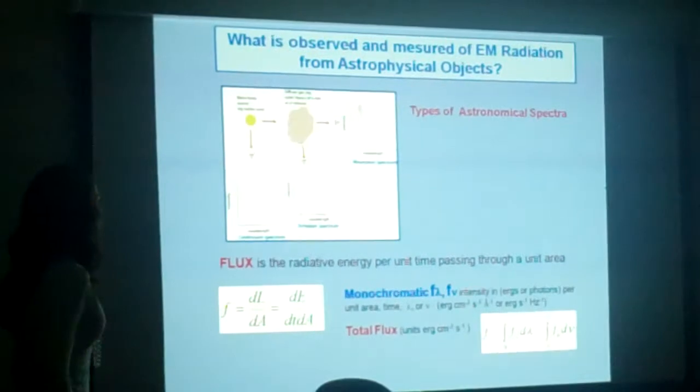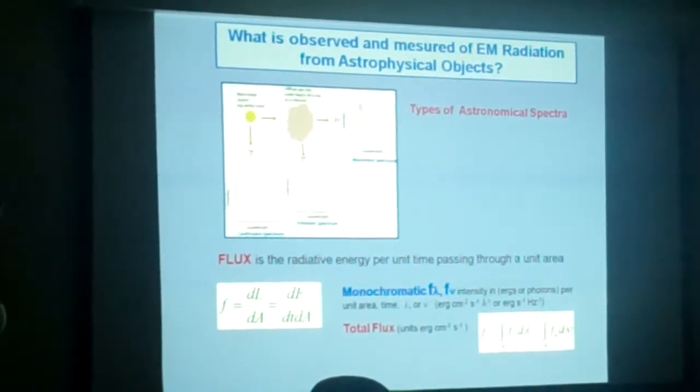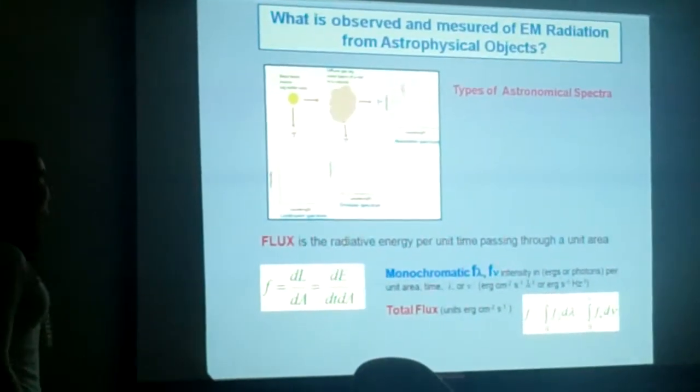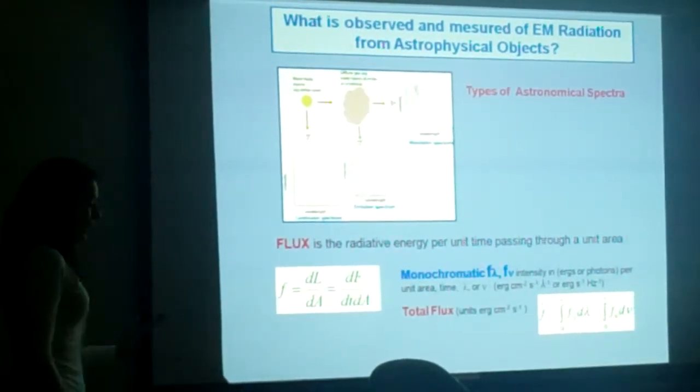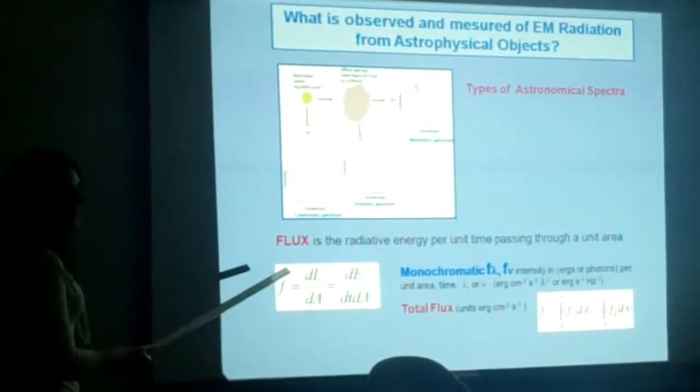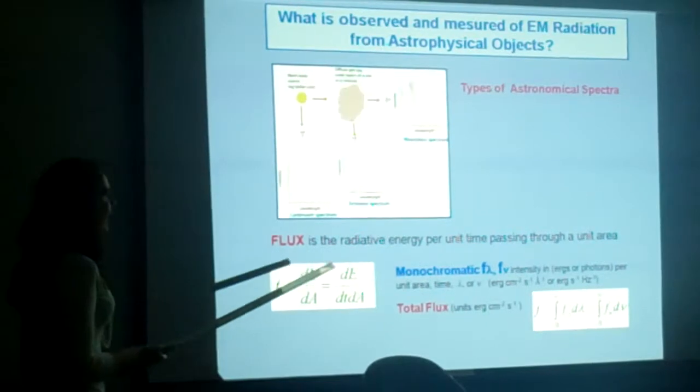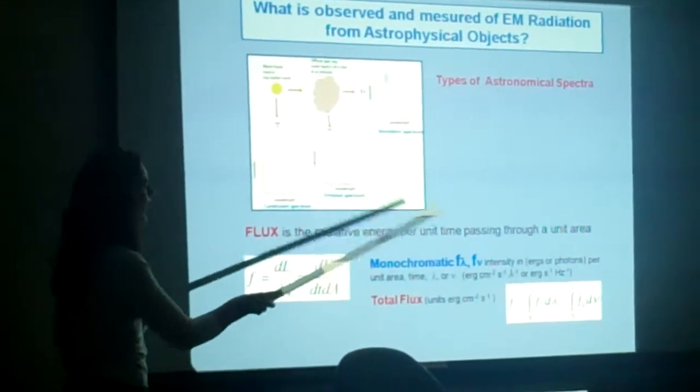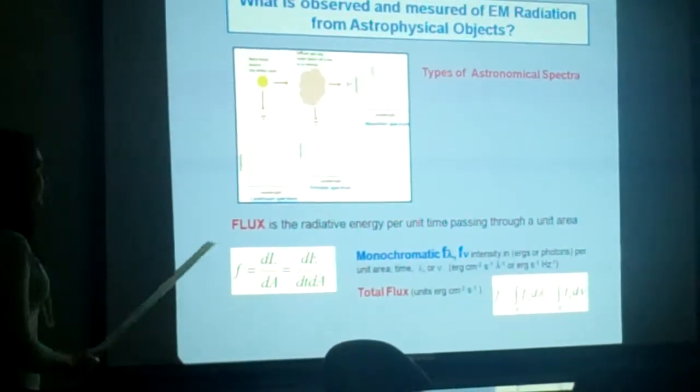What we observe about an astrophysical object, what is the quantity observed that we can measure in the images, is the flux. The flux is the energy per unit time and unit area, and is defined in this way.